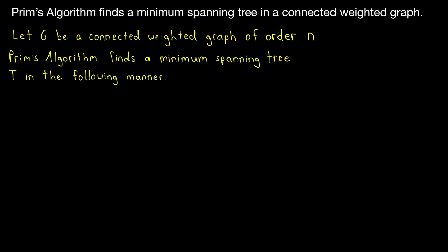Let's get into the algorithm. Let G be a connected weighted graph of order n, meaning G has n vertices. We specify that because a spanning tree of G will have one less edge than G has vertices. So once we have n minus 1 edges when constructing our spanning tree, we'll know that we can stop.